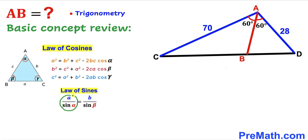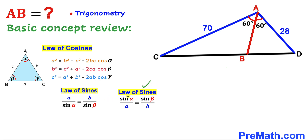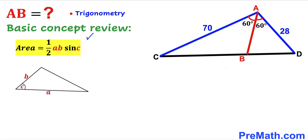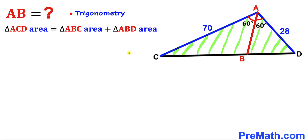Now let's go over the law of sines: A/sin(α) = B/sin(β), or equivalently sin(α)/A = sin(β)/B. Finally, let's recall the area of a triangle formula: Area = ½ × A × B × sin(C), where A and B are side lengths and C is the angle between them. We will be using this area concept to solve our problem.